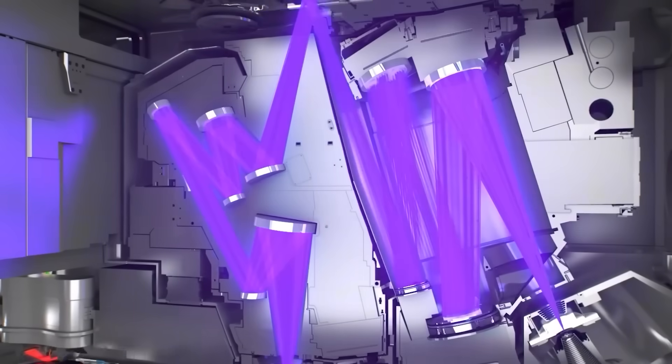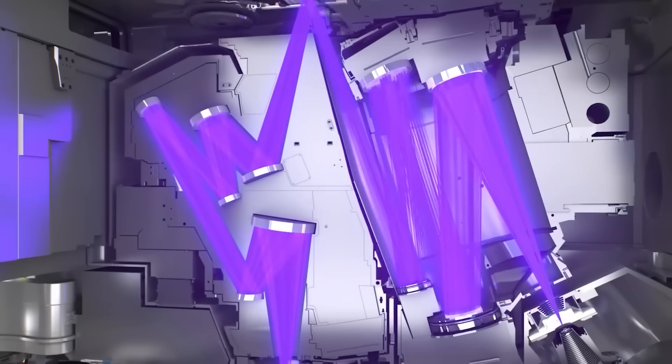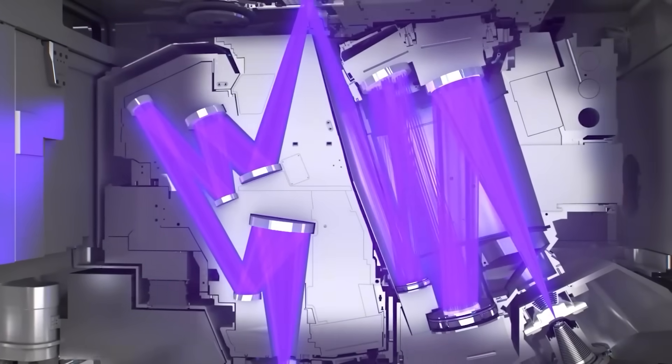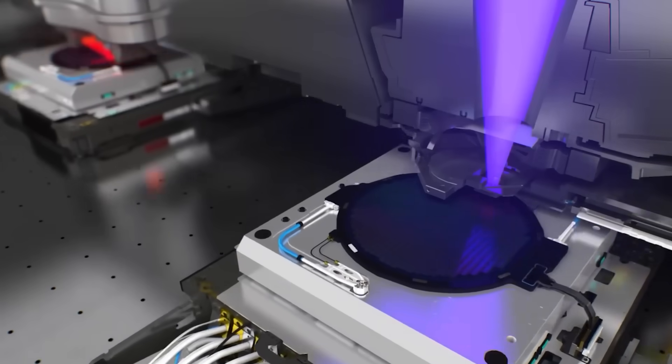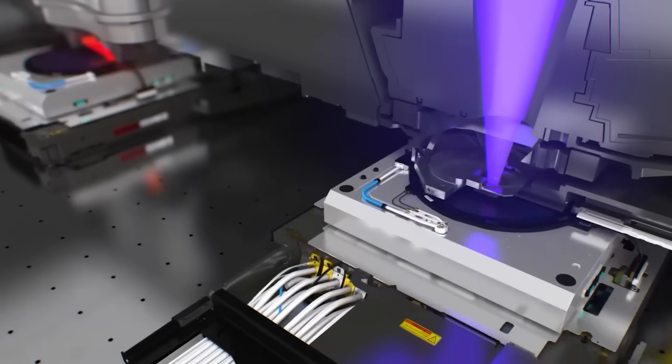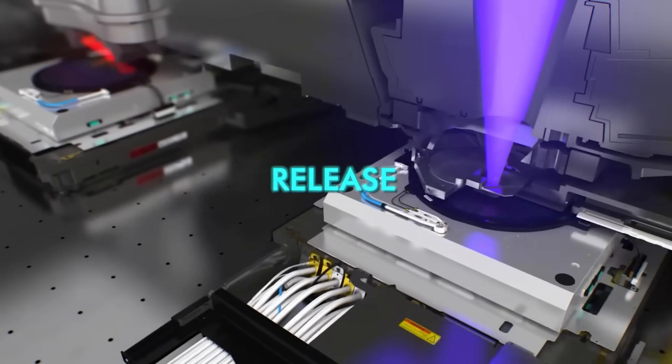A template, basically a master mold with a circuit pattern, presses into UV-curable resin on the wafer. UV light cures the resin. The template is released. Then that resin pattern is transferred into the substrate. The core steps are straightforward: press, cure, release, transfer.